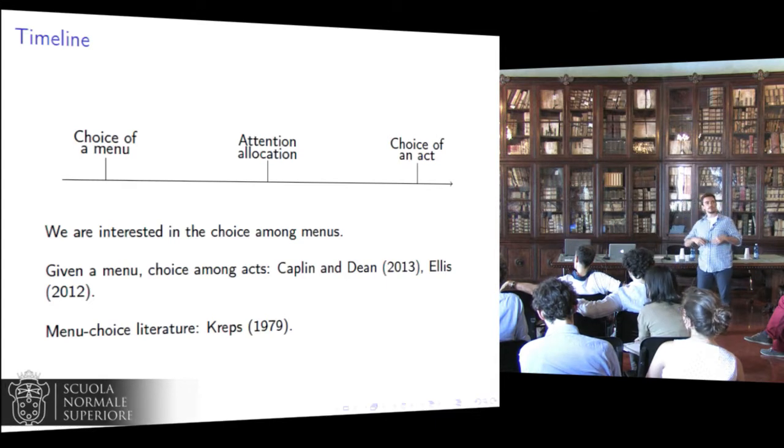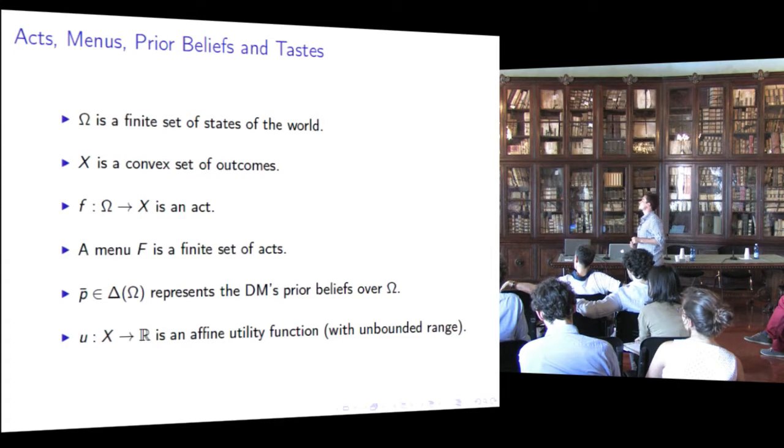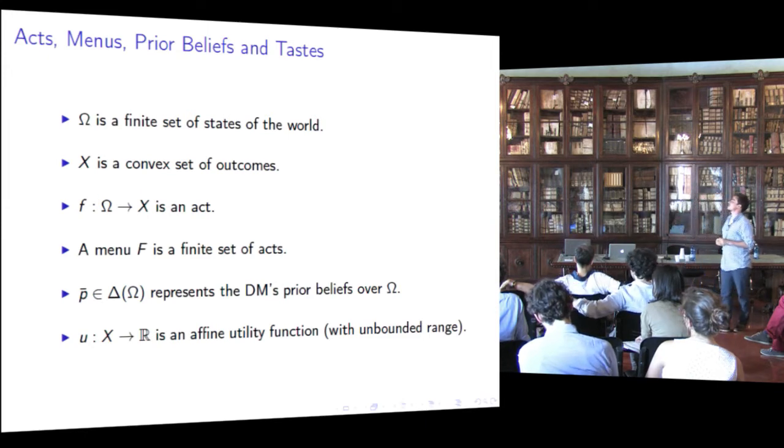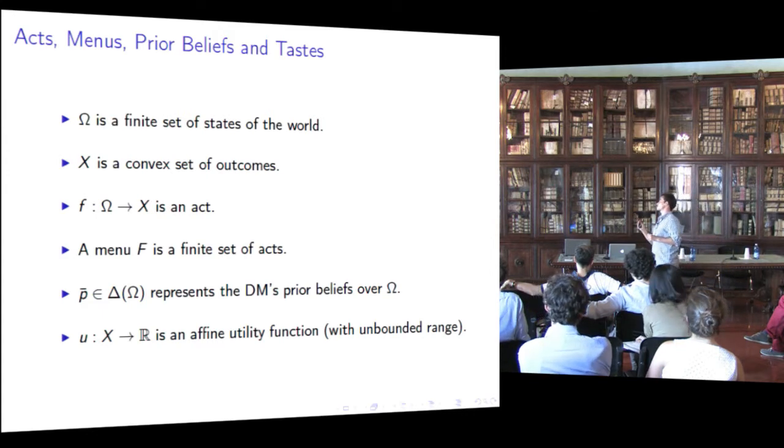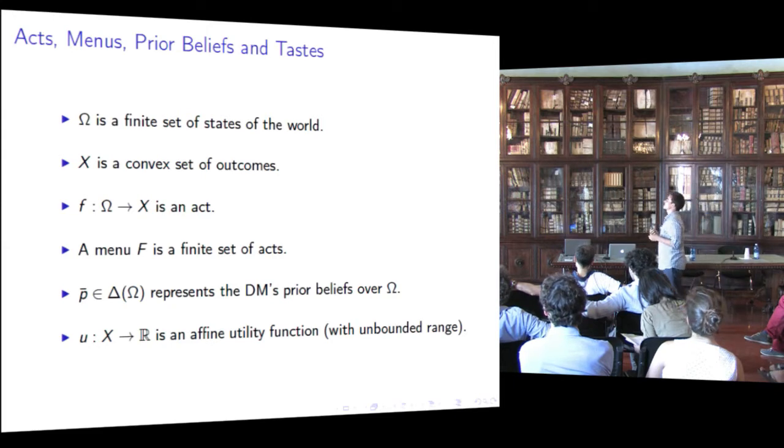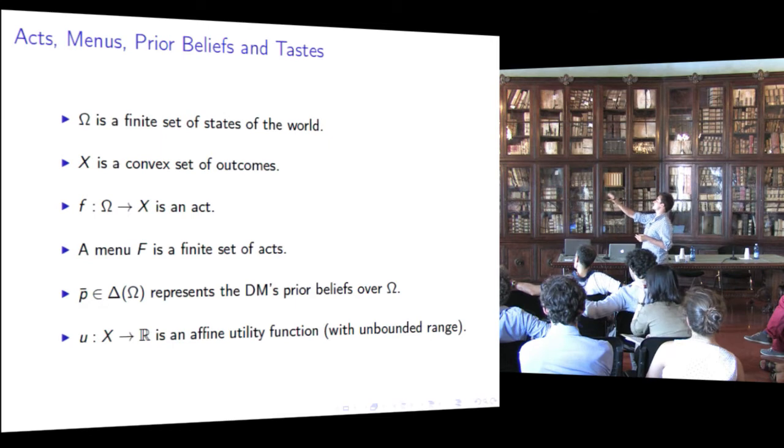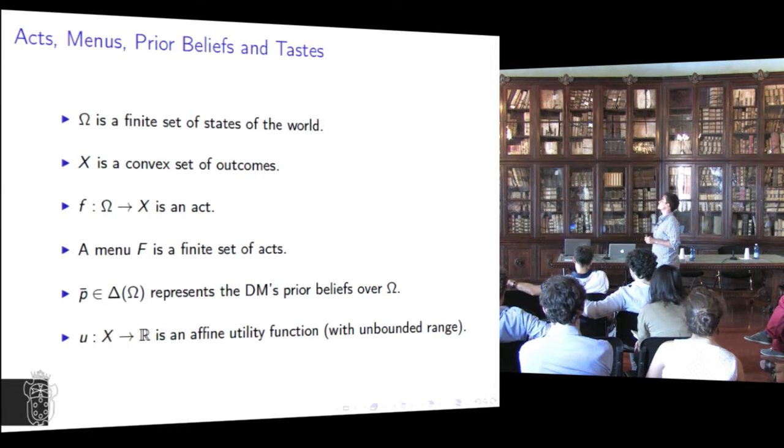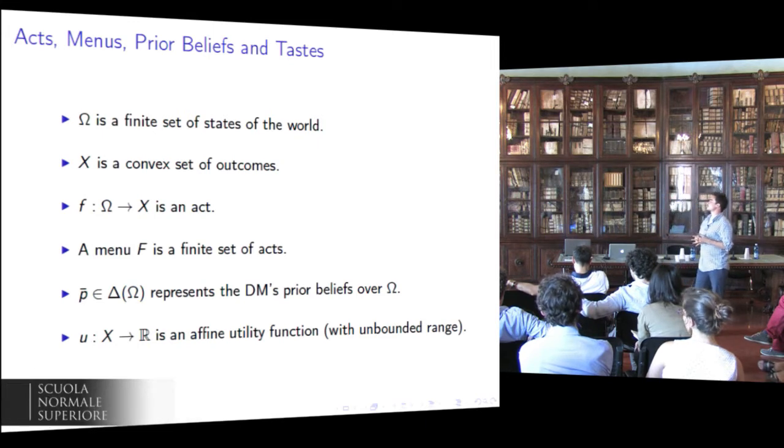Now we start to formalize the problem. Omega is a finite set of states of the world representing the basic space of uncertainty. X is a convex set of outcomes. An act, lowercase f, is a map from states to outcomes. And, uppercase F, a menu, is a finite set of acts. Using the language we learned yesterday, you recognize that a menu is just a set of Anscombe-Savage acts. Indeed, here I say outcomes, but I could have said consequences. And the convexity of the set can be thought of like X can be simple lotteries over a set of prices.